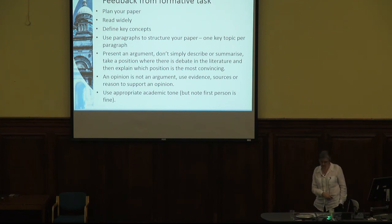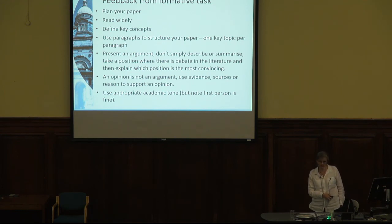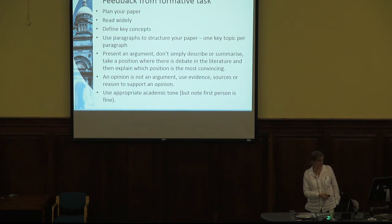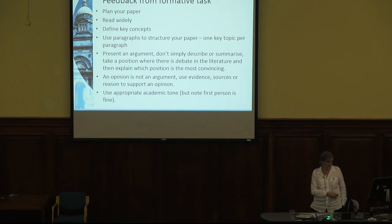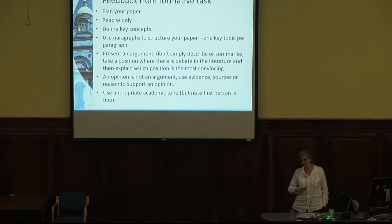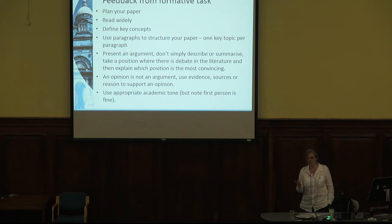Feedback from the formative task: plan your paper — don't just start writing and stop 2,000 words later. Think about what you're going to say under each section. Read widely — if you want more than a C for use of the literature, you'll need to read beyond the reading list. Define key concepts. Use paragraphs — each paragraph should have a key topic sentence with one clear point. Present an argument, not just a summary or description. Take a position where there's debate in the literature and explain what you find most convincing. An opinion is not an argument — use evidence, sources, or reason. Use appropriate academic tone: first person is fine, but say 'children' or 'young people,' not 'kids.'